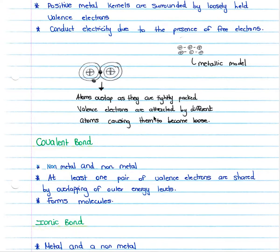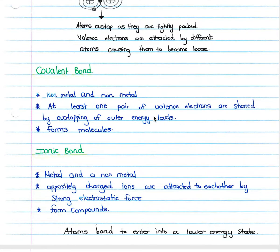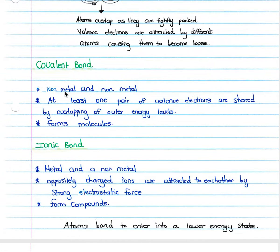Then we move on to the covalent bond. A covalent bond is between a non-metal and a non-metal. Two non-metal substances that bond together will form a covalent bond. There's at least one pair of valence electrons that are shared by overlapping of outer energy levels, and we will look at that when we look at a diagram of how covalent bonds form. A covalent bond forms a molecule.